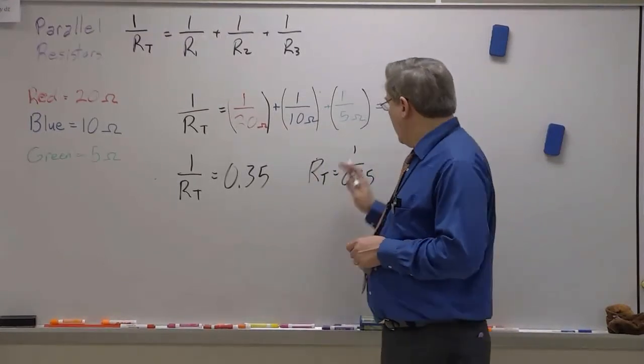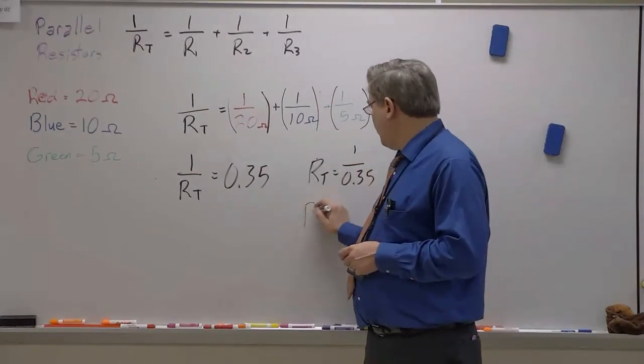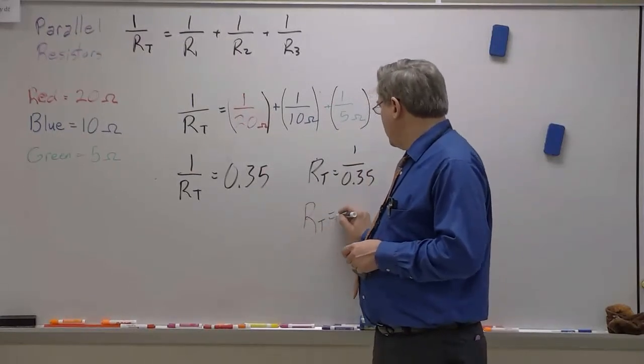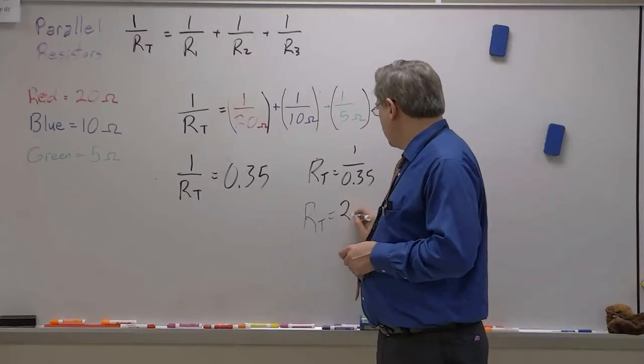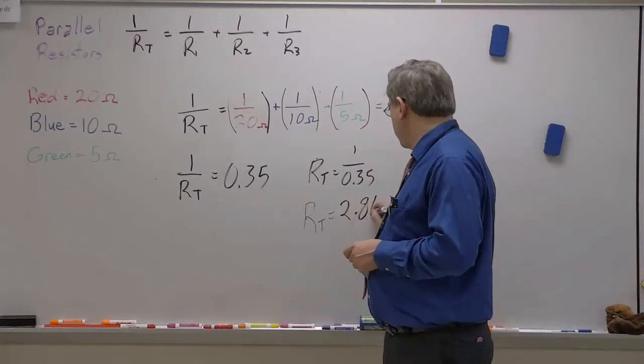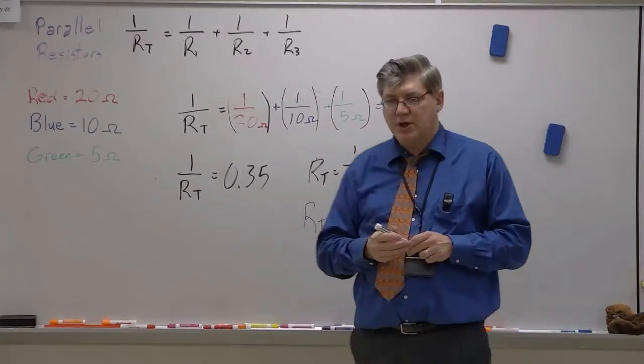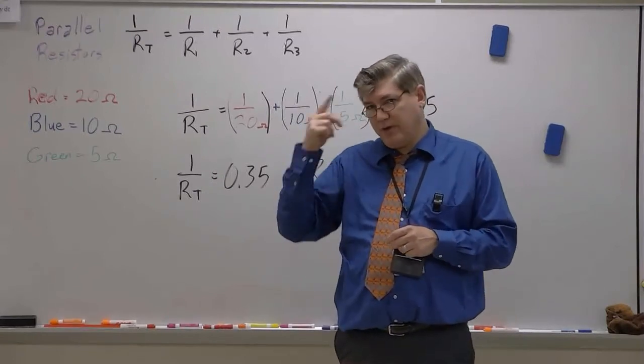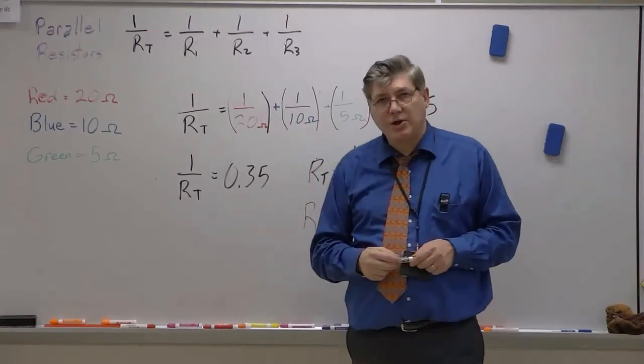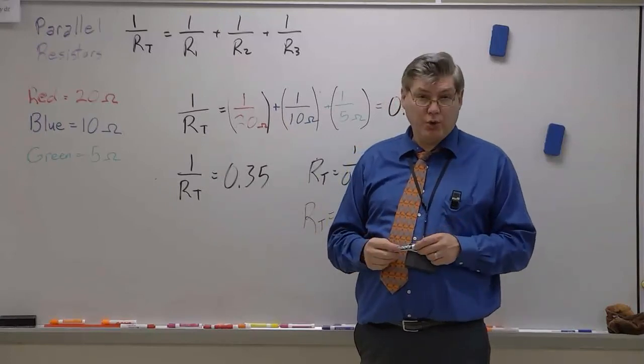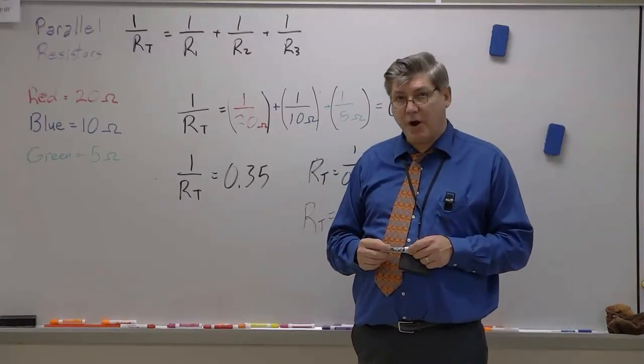That's the long way to do it, but it works. And that means 1 over 0.35 RT is something like 2.86 ohms. Don't quote me, I'm doing that from memory. But that's how to do the reciprocal rule with resistors in parallel.